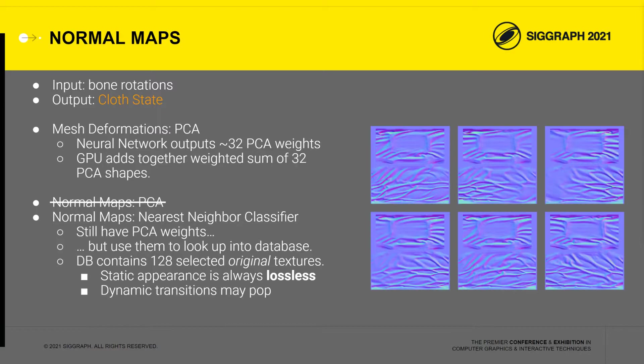Instead, we ended up using a nearest neighbor database of normal maps. The neural network still predicts a set of PCA weights for the textures, but instead of trying to reconstruct the textures directly from this representation, we go and look up the nearest entry in a nearest neighbor database. This is a texture array containing 128 entries in our shipped models, each of which is an original source normal map. The database key is the PCA weight representation of this source normal map, and the lookup consists of just finding the nearest database key to the PCA weights the neural network has produced. In a sense, this is a kind of flipbook approach for animating normal maps, although it's a random access database rather than a linear progression of textures.